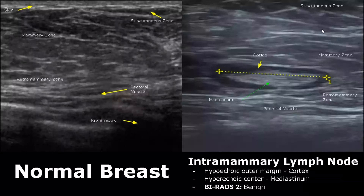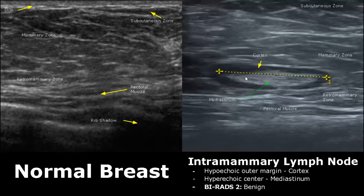Here we have an image of an intramammary lymph node. They have a hypoechoic outer cortex and a hyperechoic central hilum, which is hyperechoic usually due to fat. They are classified as BI-RADS 2.